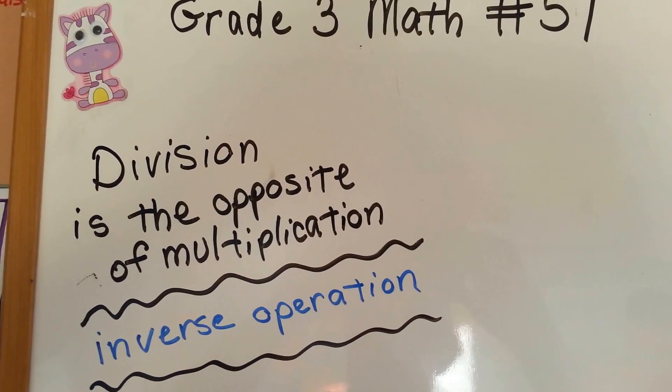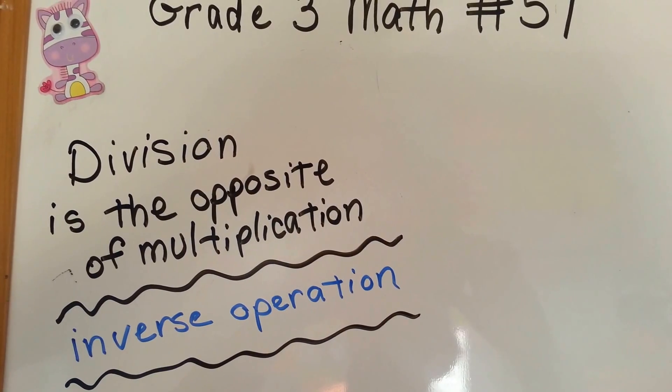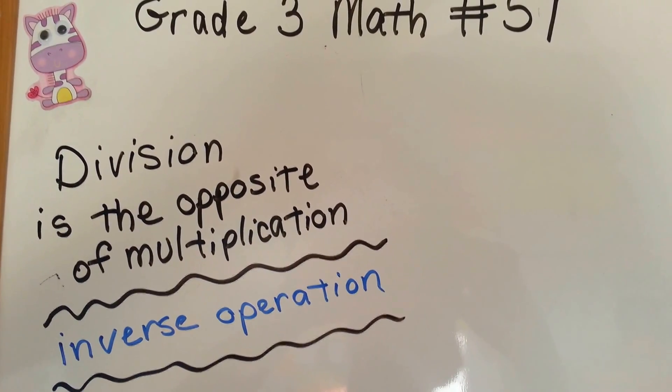3Math number 51. Division is the opposite of multiplication. It's the inverse operation.